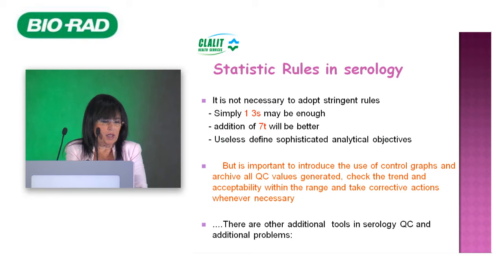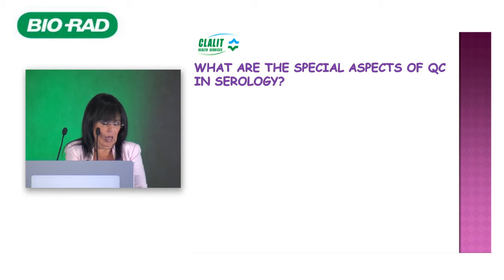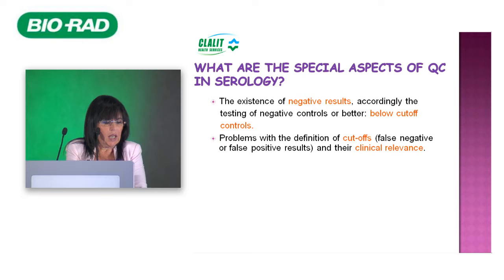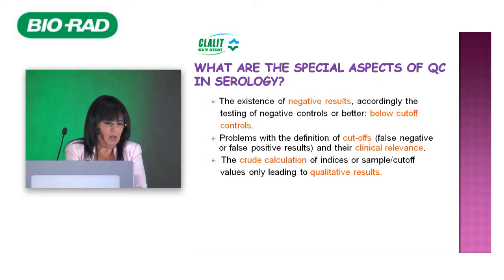There are additional tools we implement in day-to-day use. The special aspects of QC in serology include dealing with negative results and below-cutoff controls. There are problems with cutoffs themselves, because we may render false negative or false positive results — yes or no results rather than quantitative values. Clinical relevance of improper cutoffs can be tremendous. In many assays, there is a sample-to-cutoff ratio where both parts of the ratio can change independently, and we must account for their relationship when reporting qualitative results.